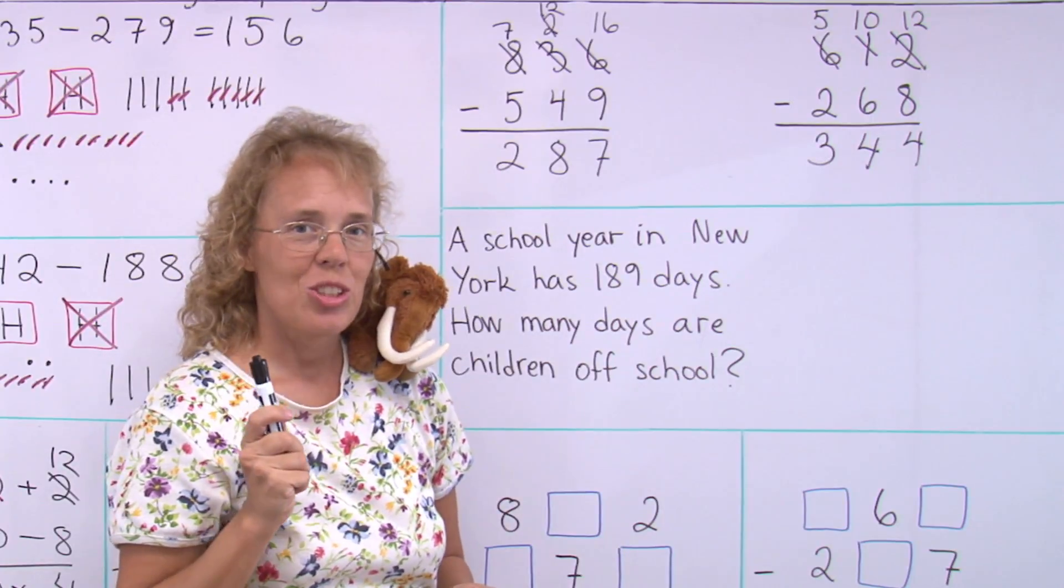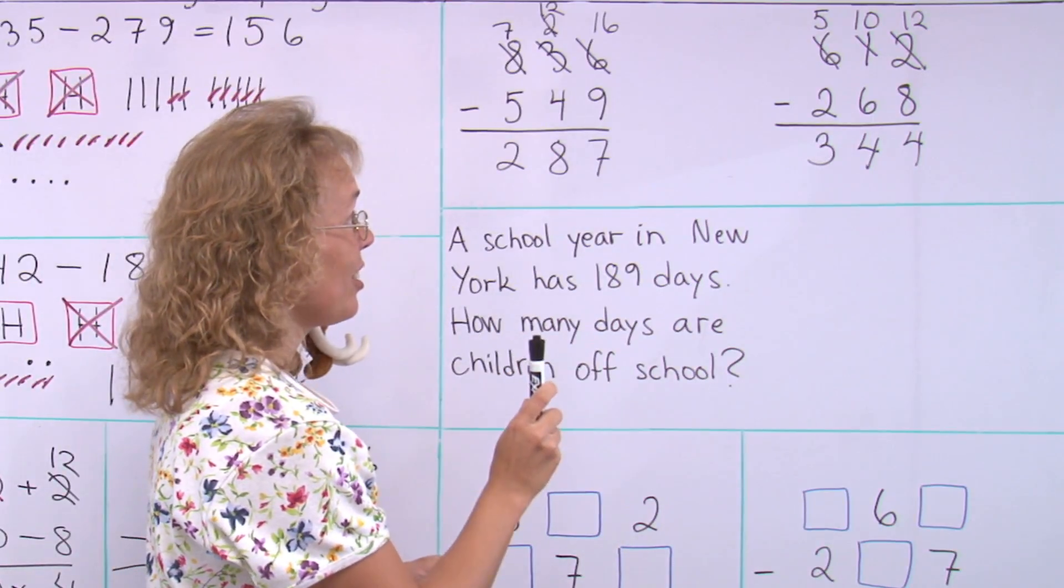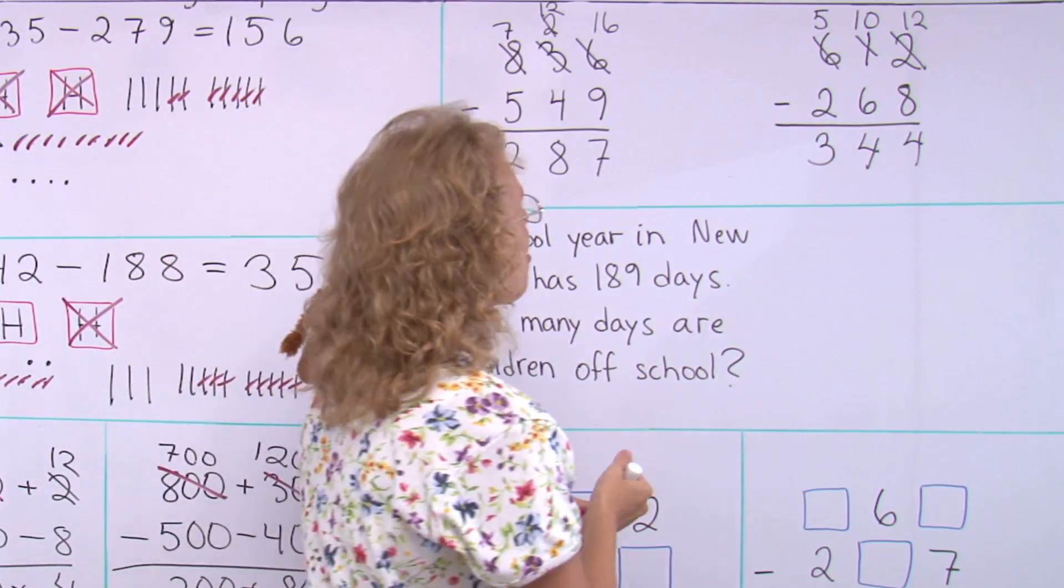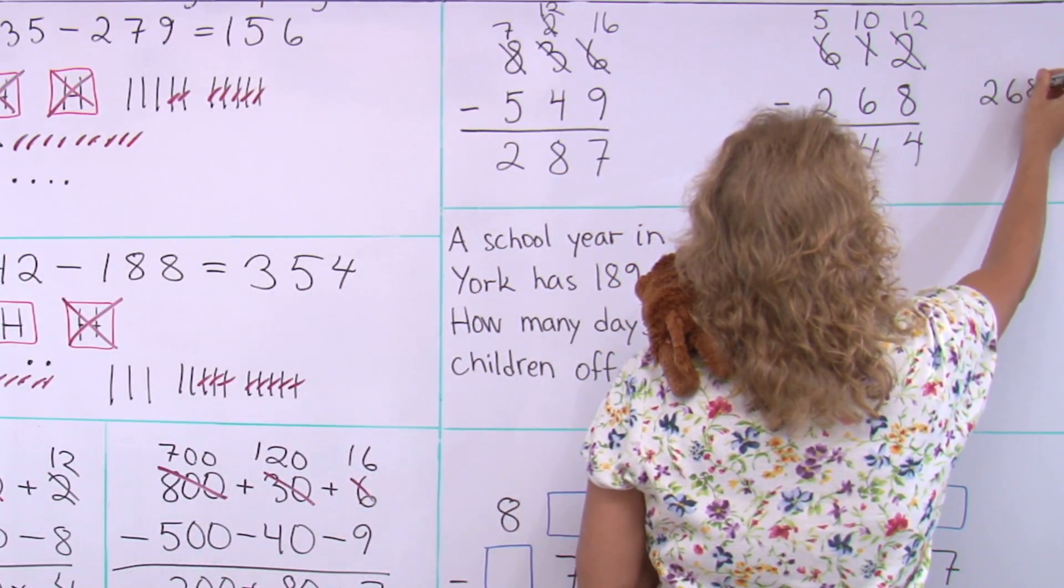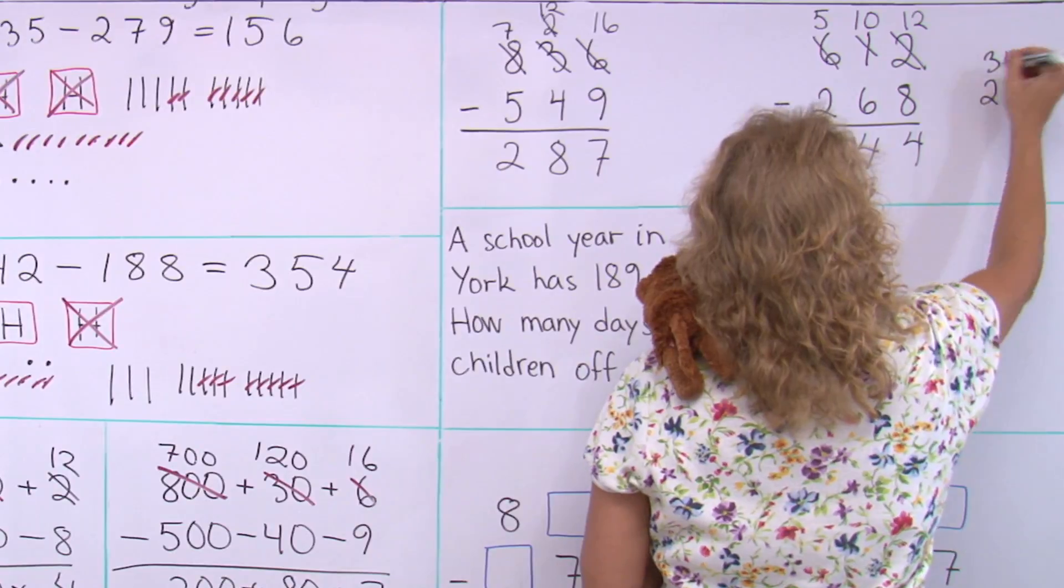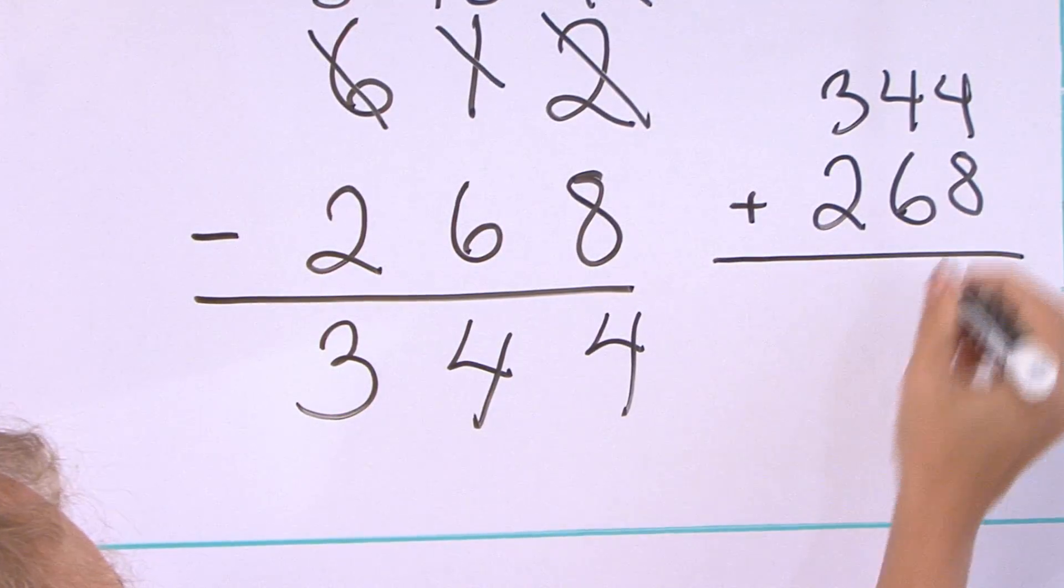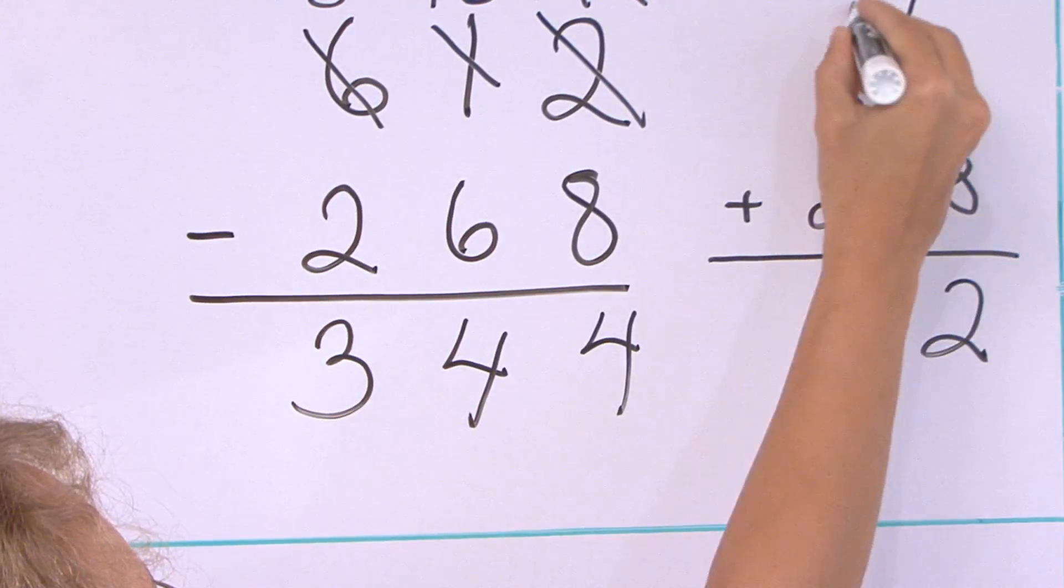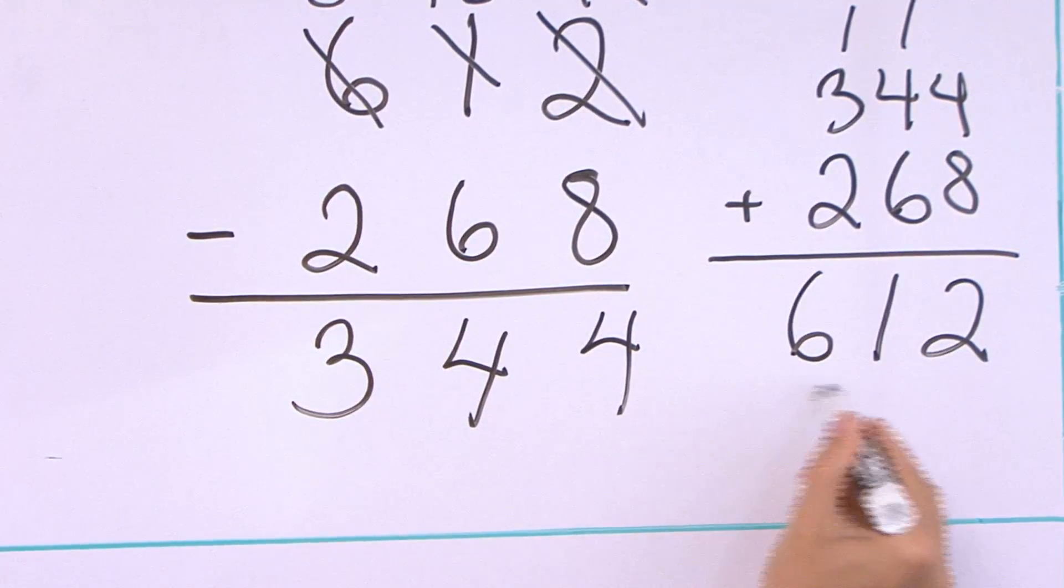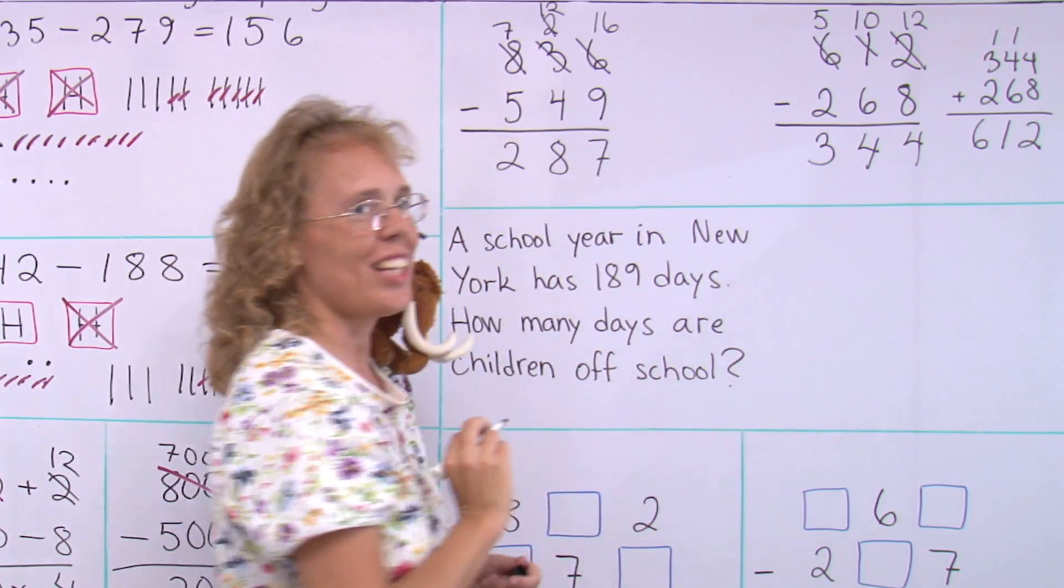And at this stage, you could now check your answer. I'll try to do that real quick. I don't have much space, but I would add two hundred and sixty-eight and three hundred and forty-four. So we get four plus eight. Twelve. Over here, eleven. And over here, six. Six hundred twelve matches that, so everything is correct.